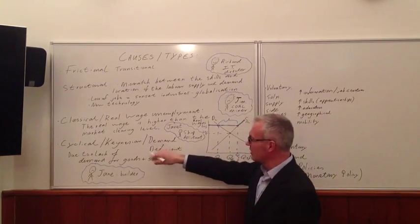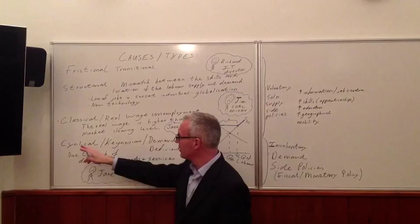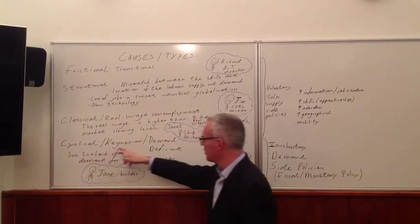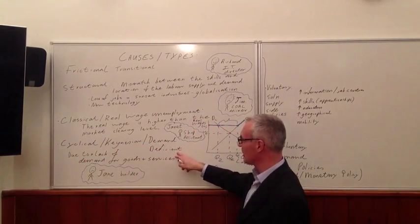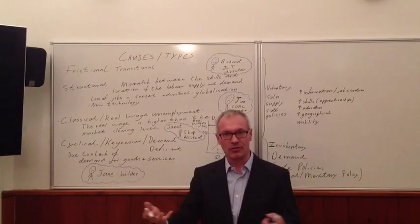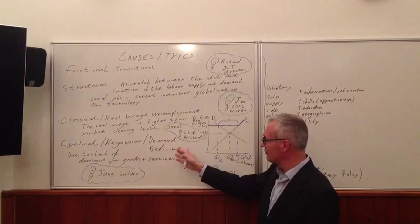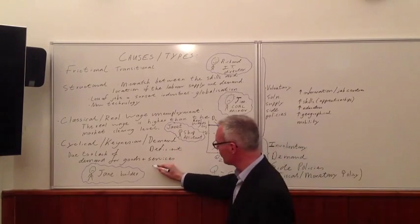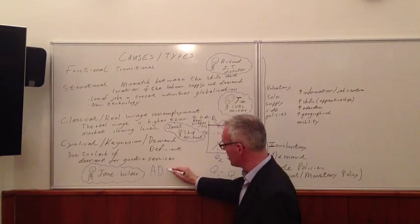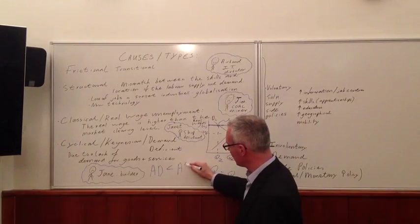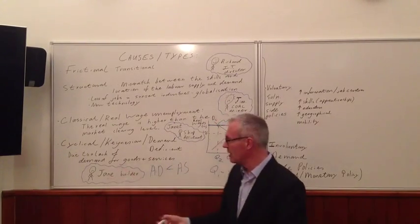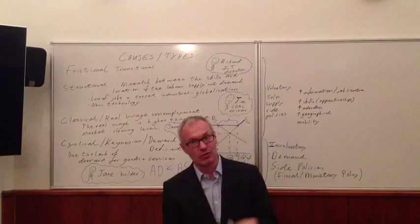We come to the last type of unemployment, known as cyclical unemployment, also known as Keynesian and demand-deficient unemployment. Keynesian because the concept was developed by the great economist John Maynard Keynes. It's demand-deficient because basically it's a result of aggregate demand being below aggregate supply in the economy.